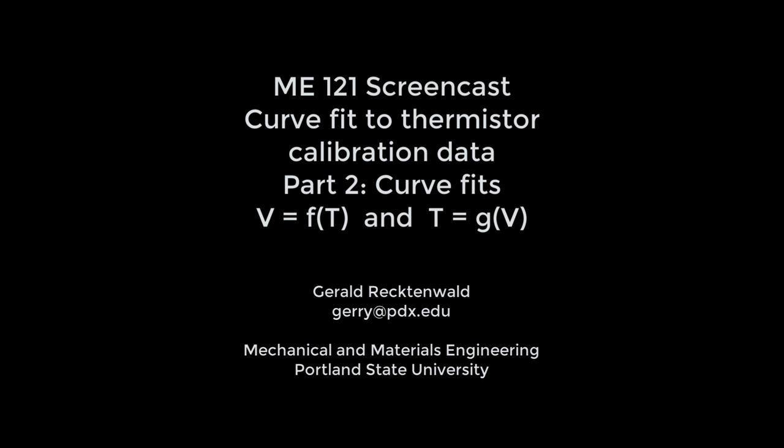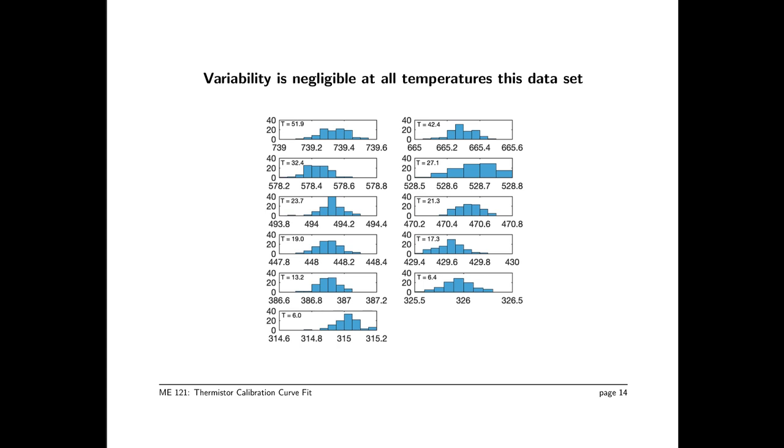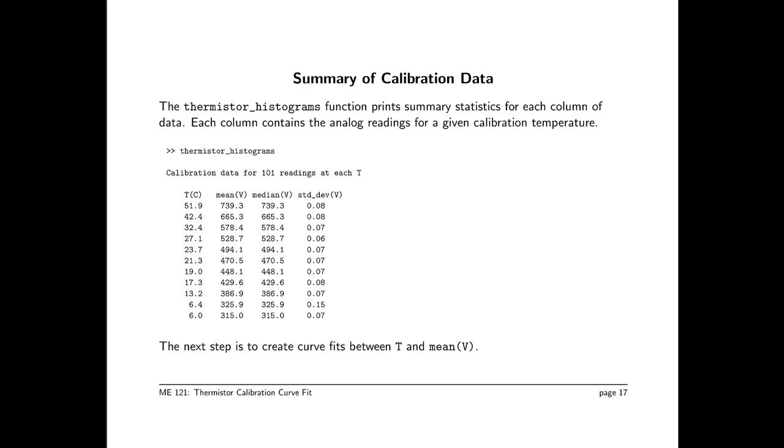This is the second part of our screencast on making a curve fit to the thermistor calibration data. We're presenting this in two parts. The first part involved reading the data into MATLAB, computing histograms, and verifying that all the measurements were good. In this second part, we're going to use least squares curve fitting to fit the data to functions that we can then use in the Arduino control code that allows us to control the temperature of the fish tank.